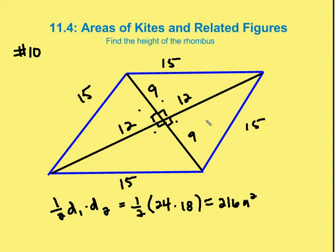Now, I know that the area of the kite is going to be the base, which is 15. The area of the rhombus is going to be the base times the height. Well, I just found out that the area is going to be 216 square units.